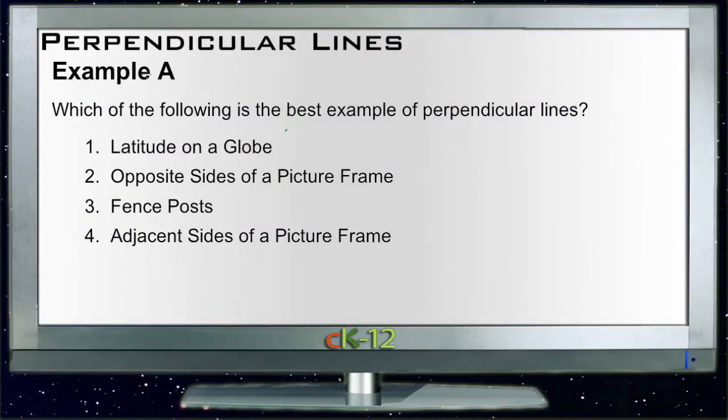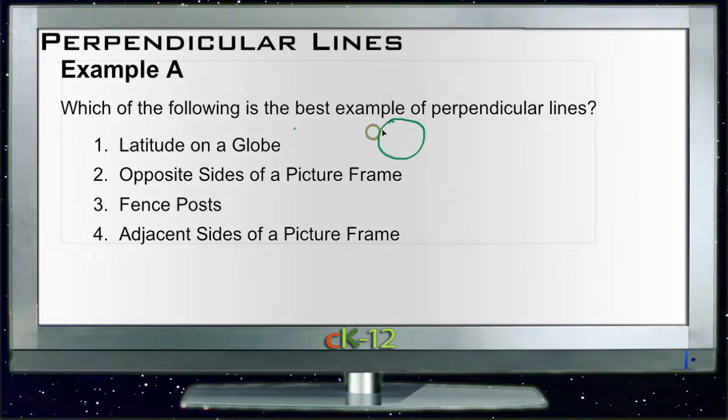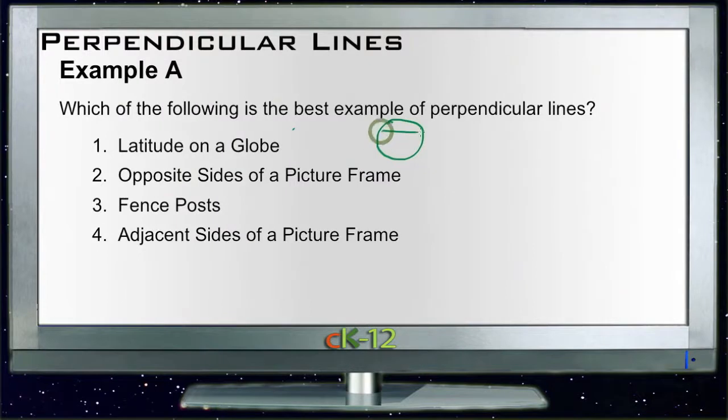Alright, let's take a look at the examples for perpendicular lines. Example A asks which of the following is the best example of perpendicular lines. The first example is latitude lines on a globe. Now on a globe, latitude lines run across the globe like so.